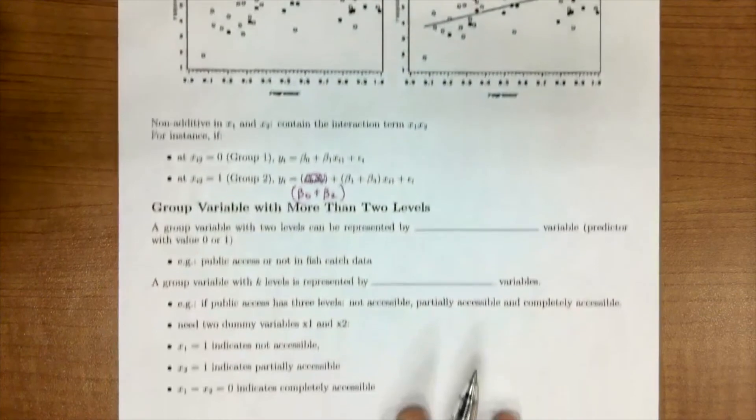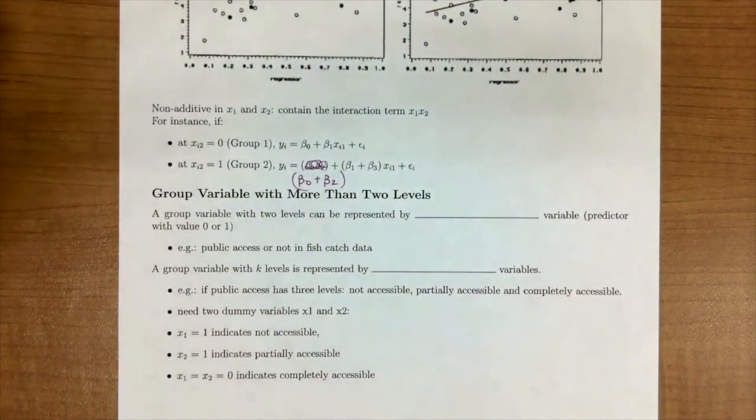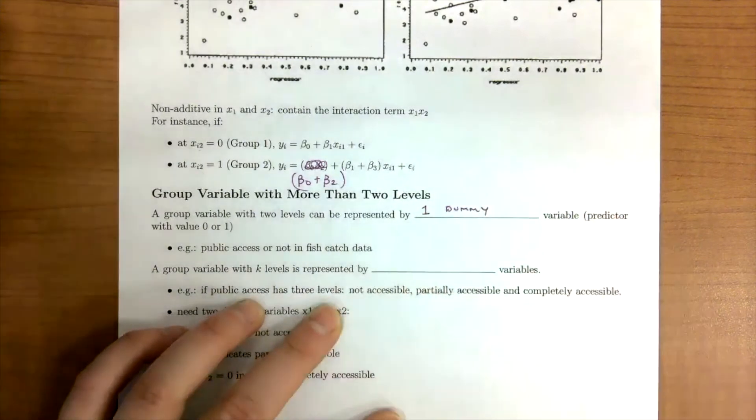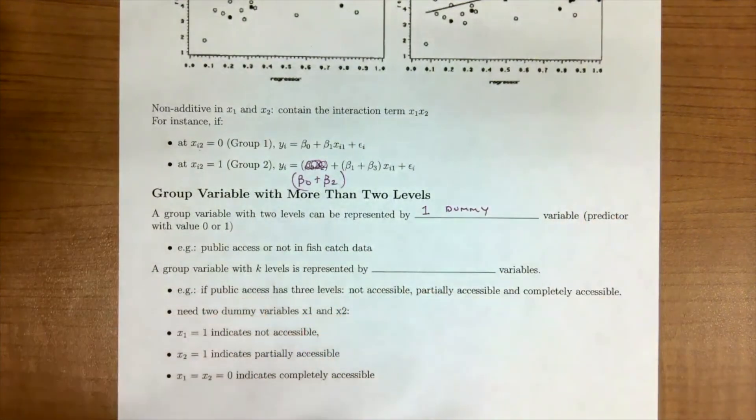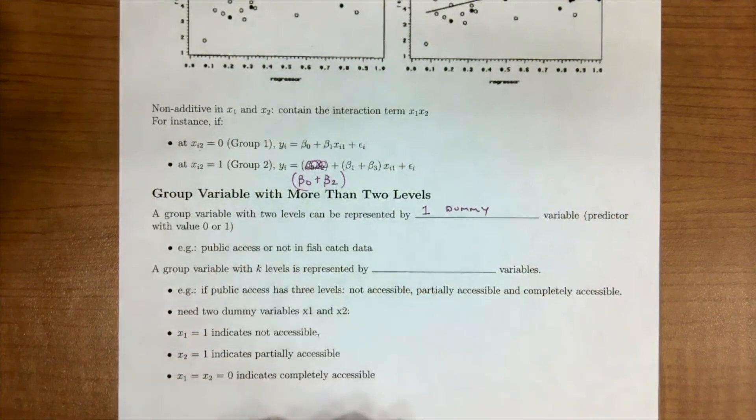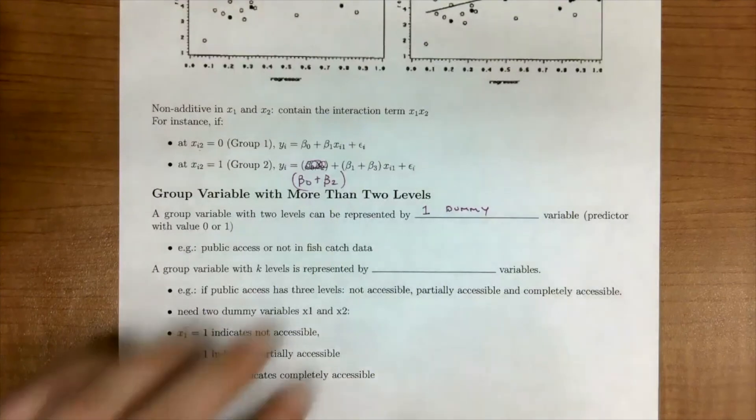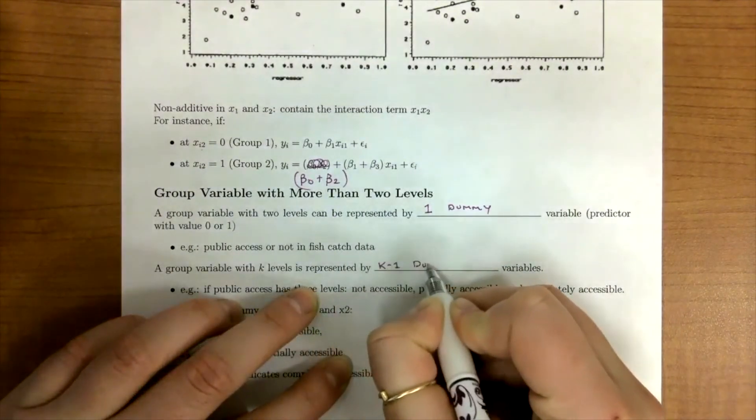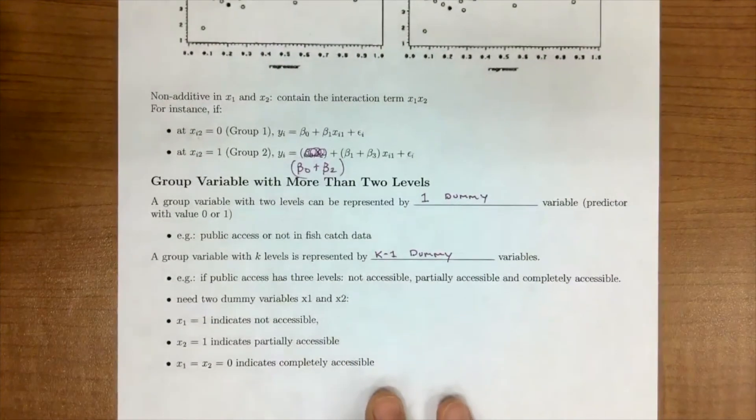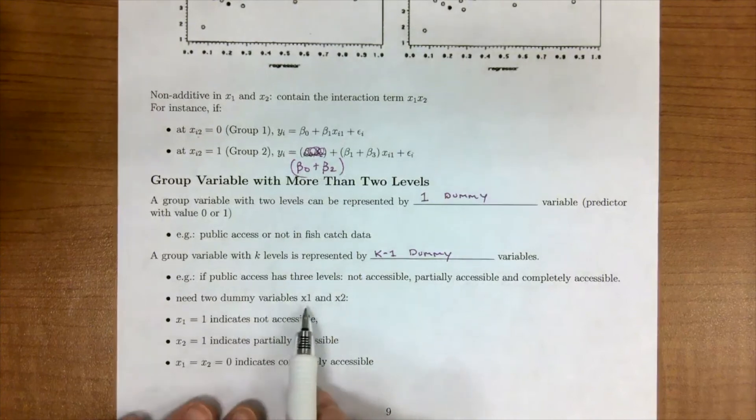So, quick summary of the dummy variables and grouping variables. A grouping variable with two levels can be represented by one dummy variable. So in our fish example, public access or not. If we have a grouping variable with k levels, then we need k minus 1 dummy variables to address it. So let's say that our public access had three levels, not accessible, partially accessible, and then completely accessible. We would need two dummy variables, x1 and x2.